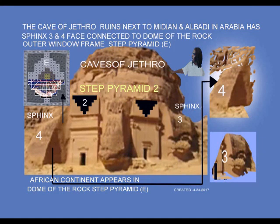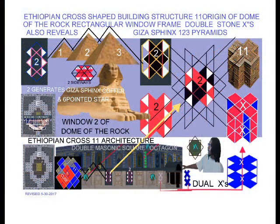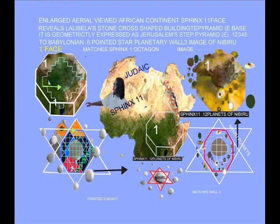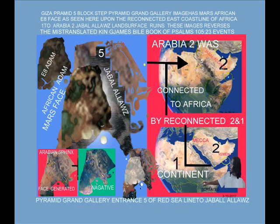As we look at this Dome of the Rock octagonal building structure that has four doors with canopies over them — next to each canopy on the outer wall surface, we see a stone rectangular window frame that has dual stone X's, one above the other. On a blank sheet of paper, if you write two stone X's the thickness of your little finger, one above the other, then draw straight lines down from the top corners of the X so that they intersect with the bottom X's corners, then draw a line straight down the middle, you have just generated a black African Ethiopian stone cross-shaped building structure in Lalibela. We have 100% geometrically proven that the architectural building structure in Lalibela is the origin of the Dome of the Rock octagonal building structure in Jerusalem.